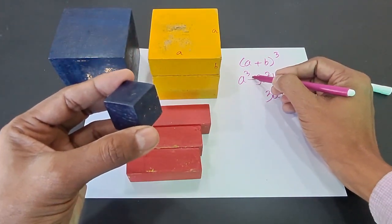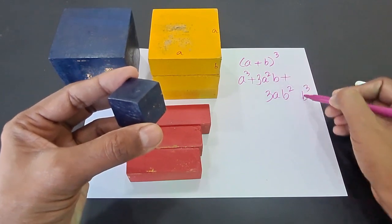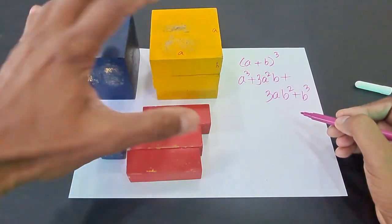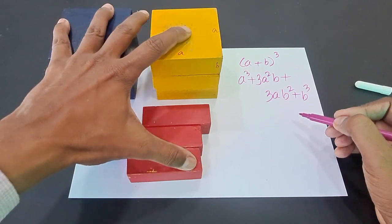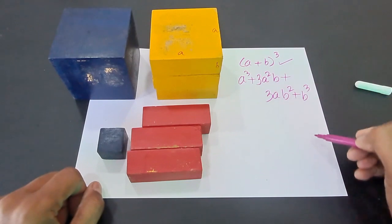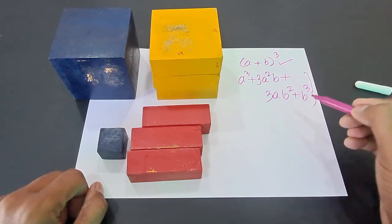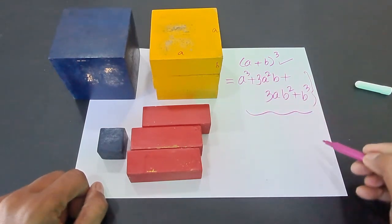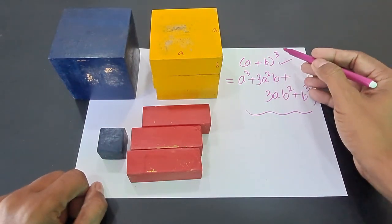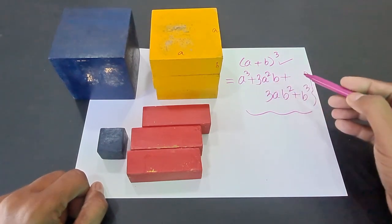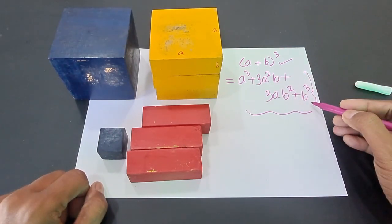If you add the volume of all the eight small solids—obviously these small solids were made from the big cube—therefore the volume of the big cube and the combined volume of the eight solids will be equal. And that derives our identity: (a+b)³ = a³ + 3a²b + 3ab² + b³.